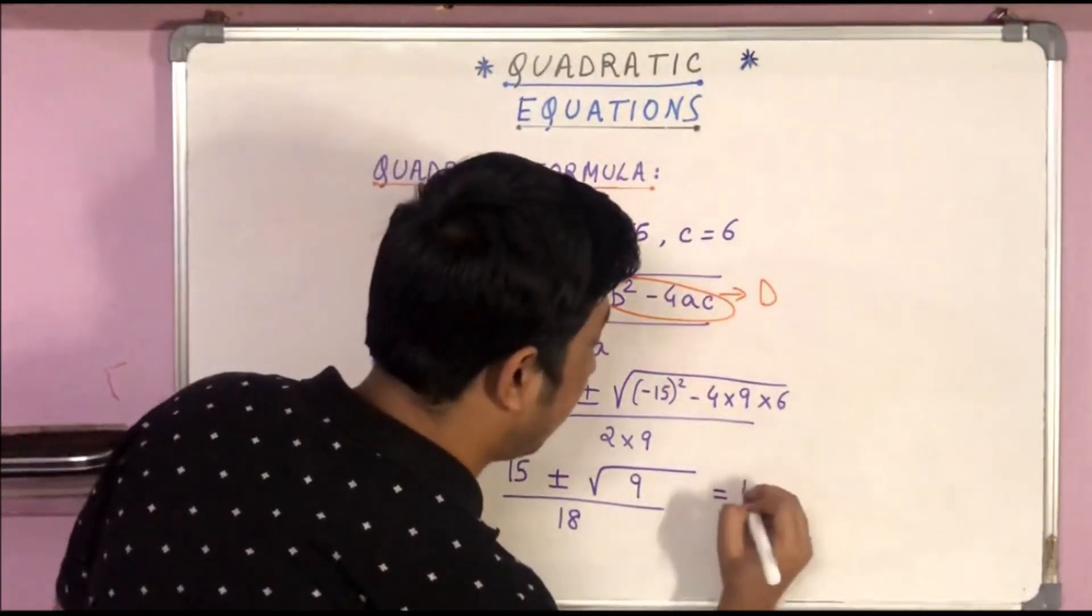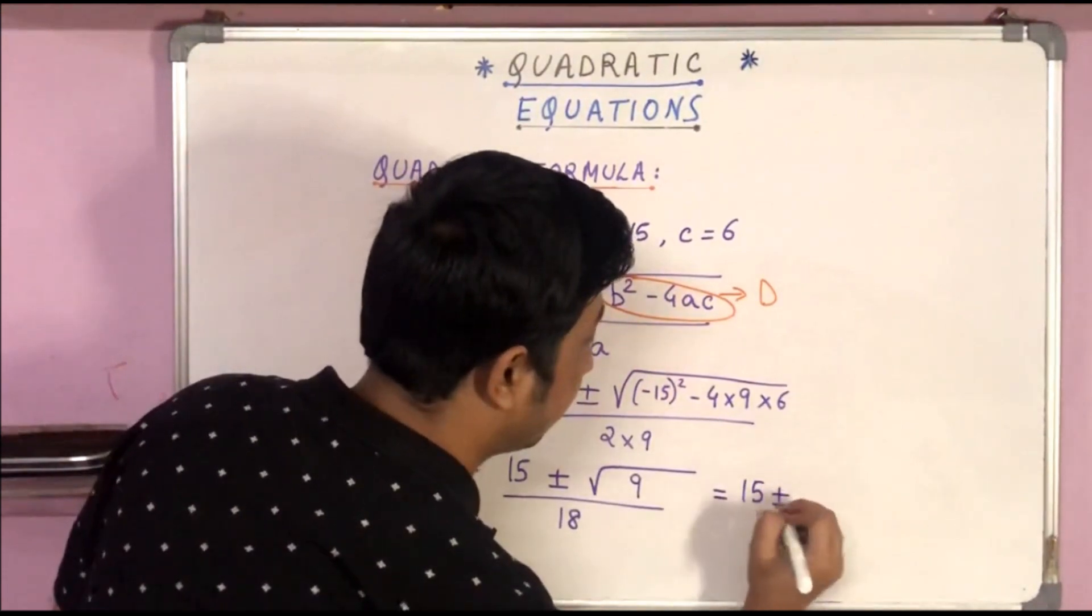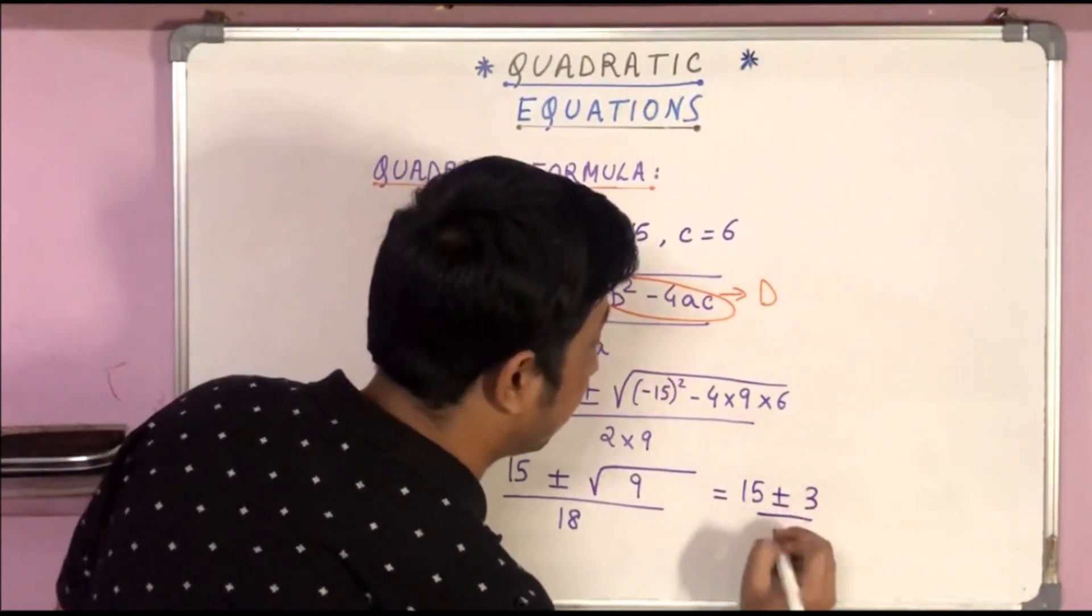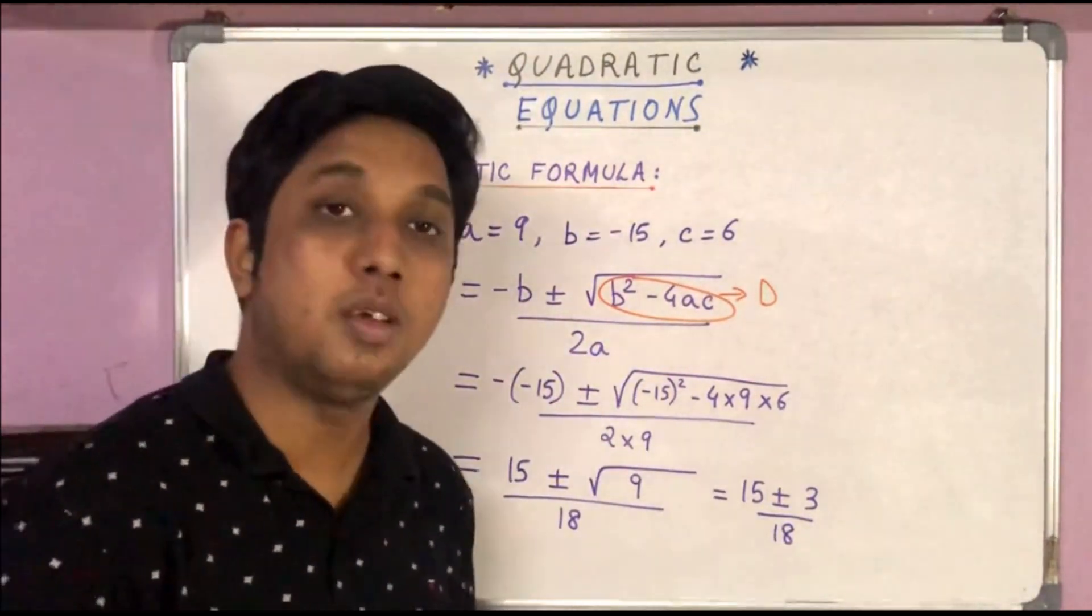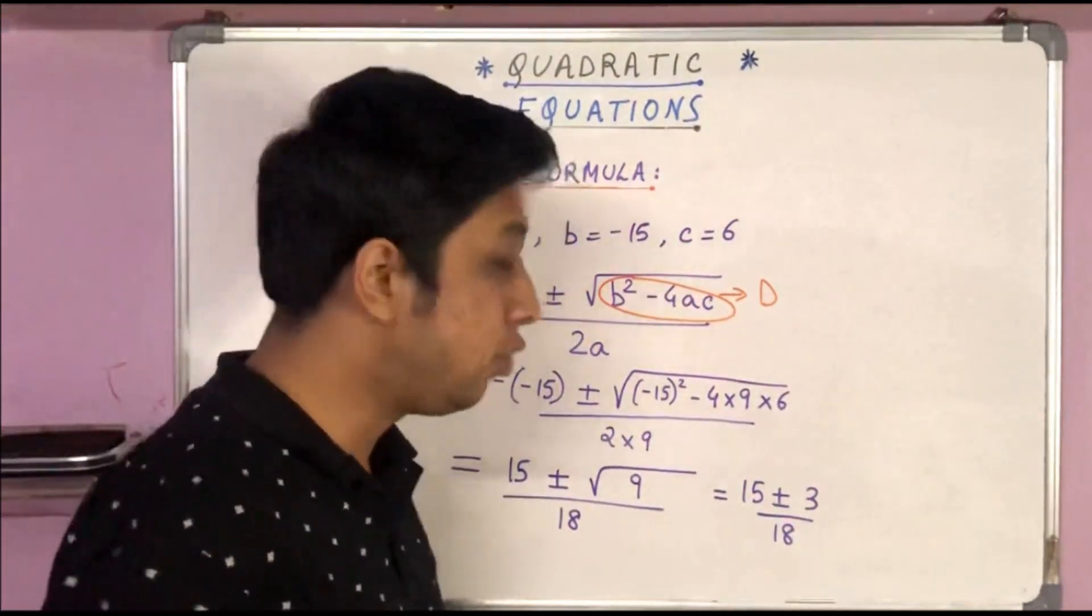And root over 9 is 3. So we get 15 ± 3 by 18.